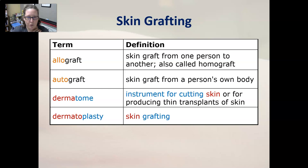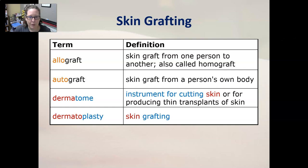Their skin heals up and then you use their skin on the person that was burned. An autograft is a skin graft from a person's own body, usually from a region that is not the same as the burned region — they may take it from the abdomen or another limb to graft onto the burn.